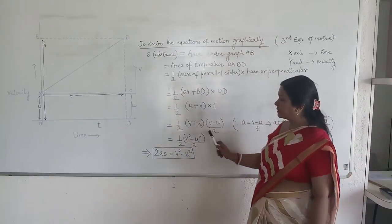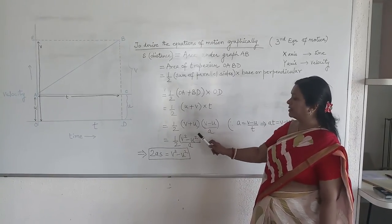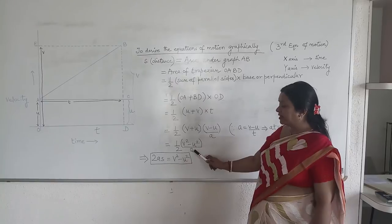Now you solve this part. Half. We know V plus U into V minus U is V square minus U square. And A remains in the denominator.